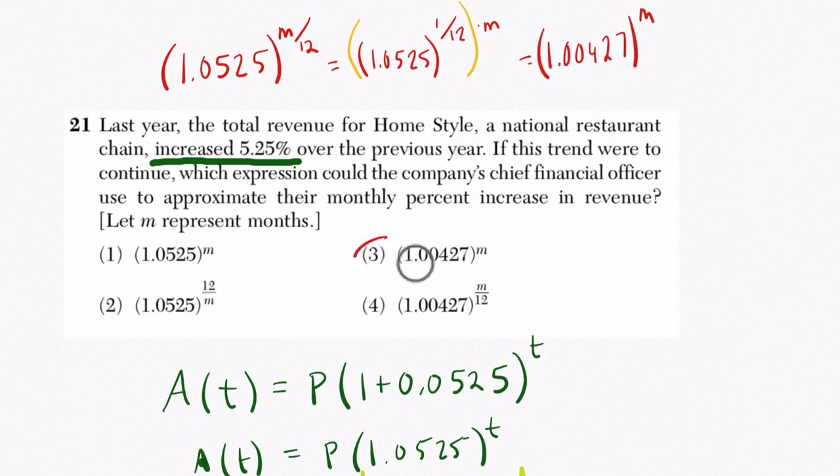That's equivalent, and that's choice three. So often you'll find on the Regents problems you have to change the increment of time, but then you have to redistribute the exponent kind of like we did here. All right, hope that helps.